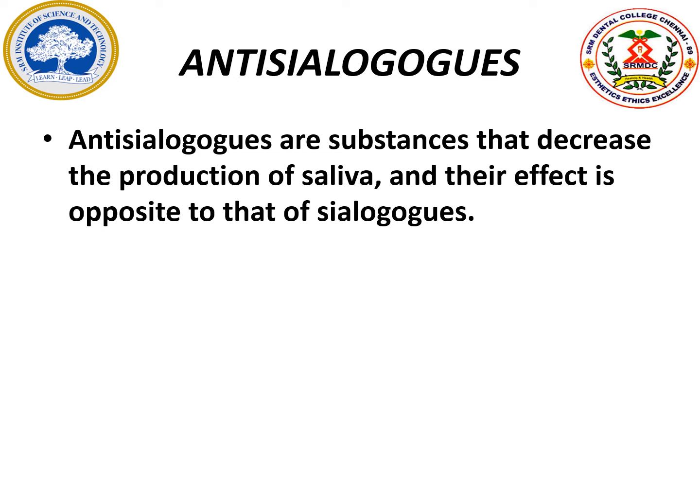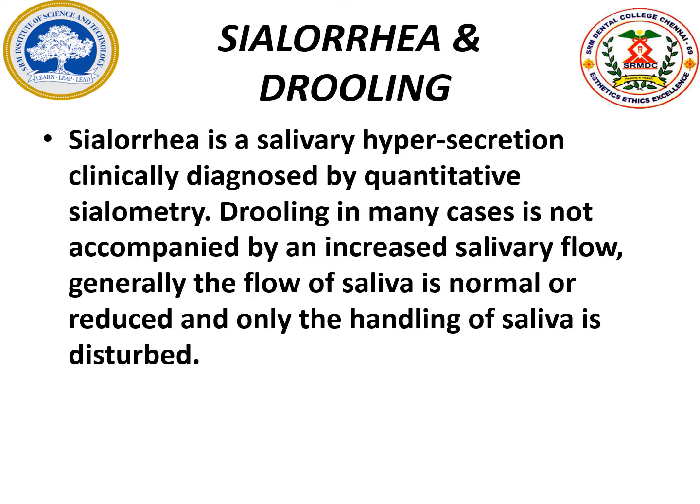Anti-sialogogues. What are these anti-sialogogues? These are substances which act opposite to sialogogues — these drugs decrease the production of saliva. They are used in conditions like sialorrhea and drooling. Sialorrhea is a hypersecretory salivary condition measured quantitatively by a sialometry apparatus. Whereas drooling is not a hypersecretory condition — it is an uncontrollable, undisturbed handling of saliva. Drooling sometimes occurs normally in toddlers during teething, but other drooling is mainly due to uncontrollable handling of saliva.